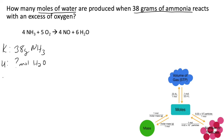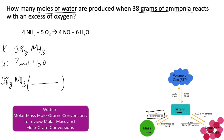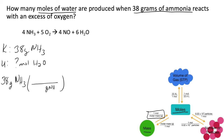We always begin with what is given. So we have 38 grams of ammonia, and whenever you begin with something other than moles in stoichiometry problems, you're going to need to convert that to moles. In this case we have mass and we're going to convert this to moles. The mole map tells us which conversion factor we need to use — in this case it will be molar mass, set up with moles at the top and grams at the bottom. So I'm going to have grams of ammonia at the bottom and moles at the top.